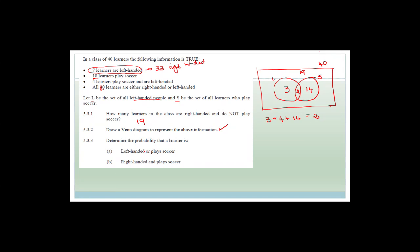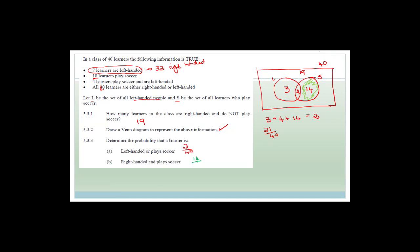Left-handed or plays soccer is the same as adding — that covers everything in the two circles, which is 21 out of 40. So the probability that someone is left-handed or plays soccer is 21/40. The probability that they're right-handed and play soccer is only the 14 right-handed soccer players, which is 14/40, the same as 7/20. If you draw your Venn diagram, all the rest of the questions become very easy to solve.